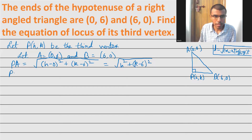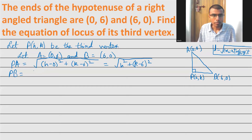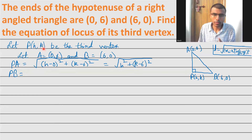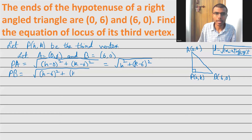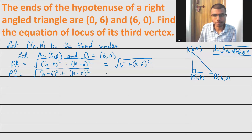Next, I'm going to find PB. For PB, taking (h,k) as (x₂,y₂) and B=(6,0) as (x₁,y₁), we get PB = √((h−6)² + (k−0)²) = √((h−6)² + k²).